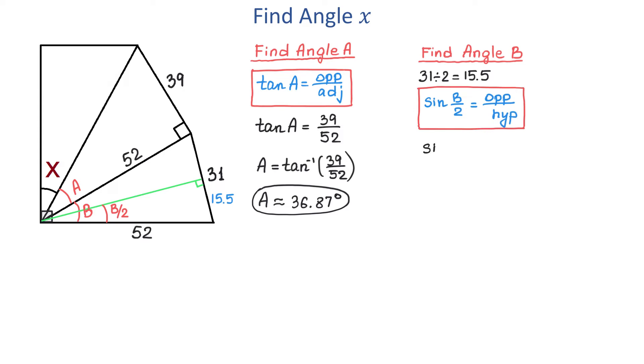Then sine of B over 2 equals 15.5 divided by 52. To find the angle B over 2 we will take sine inverse of 15.5 over 52. Then B over 2 is approximately 17.34 degrees. To find angle B we multiply this angle by 2 and we get that angle B is approximately 34.68 degrees.